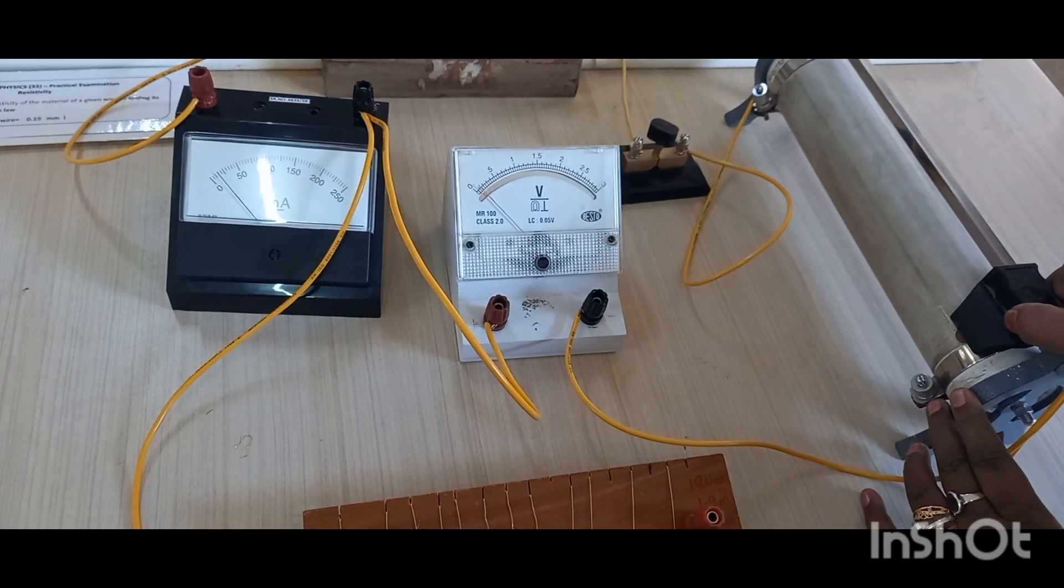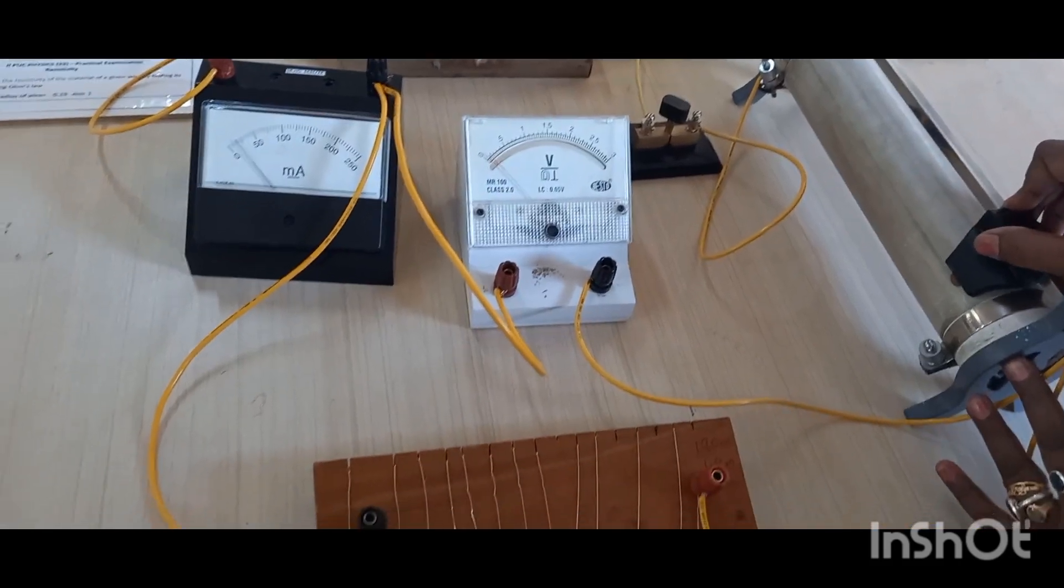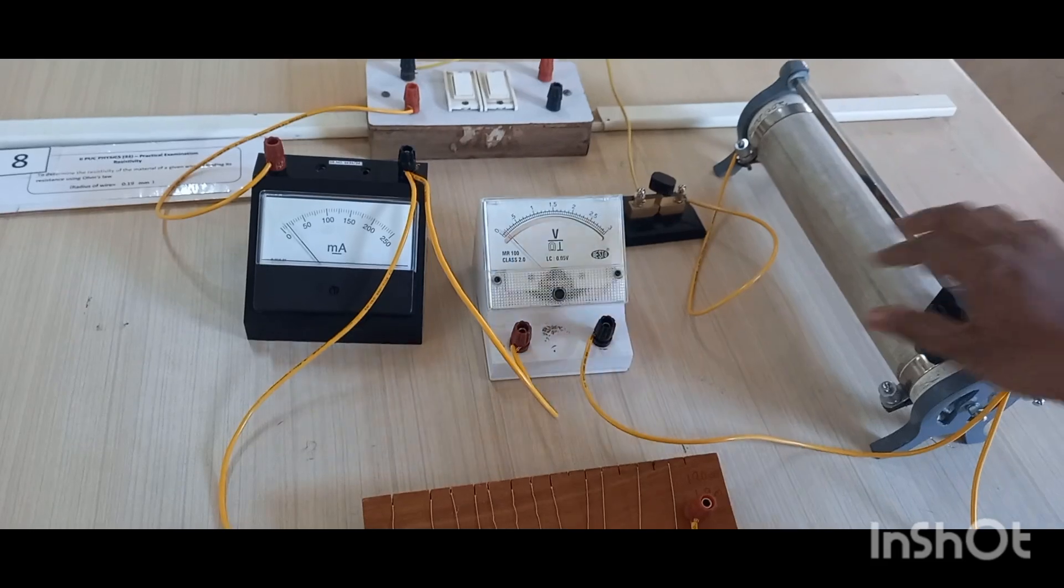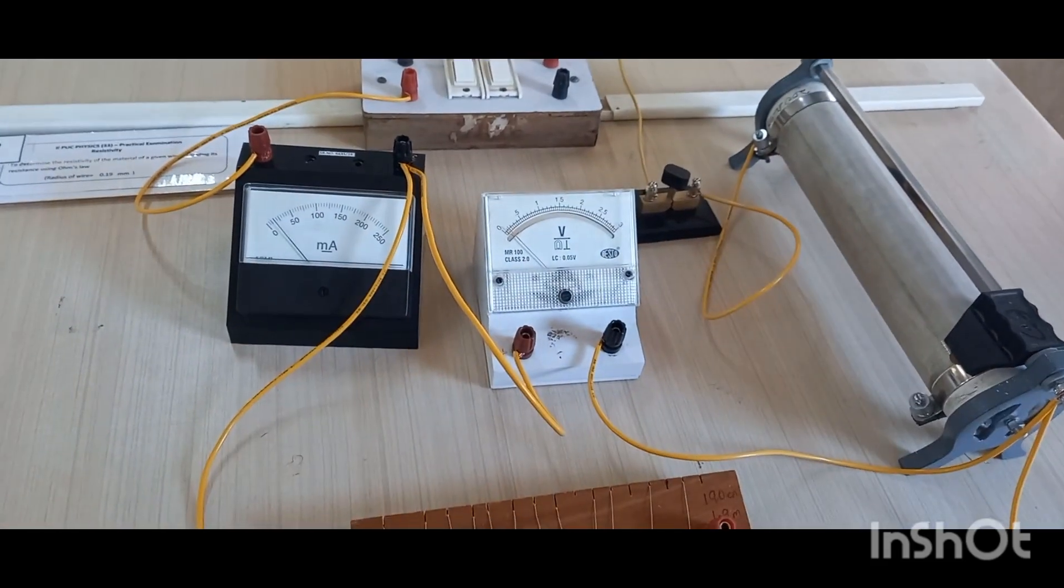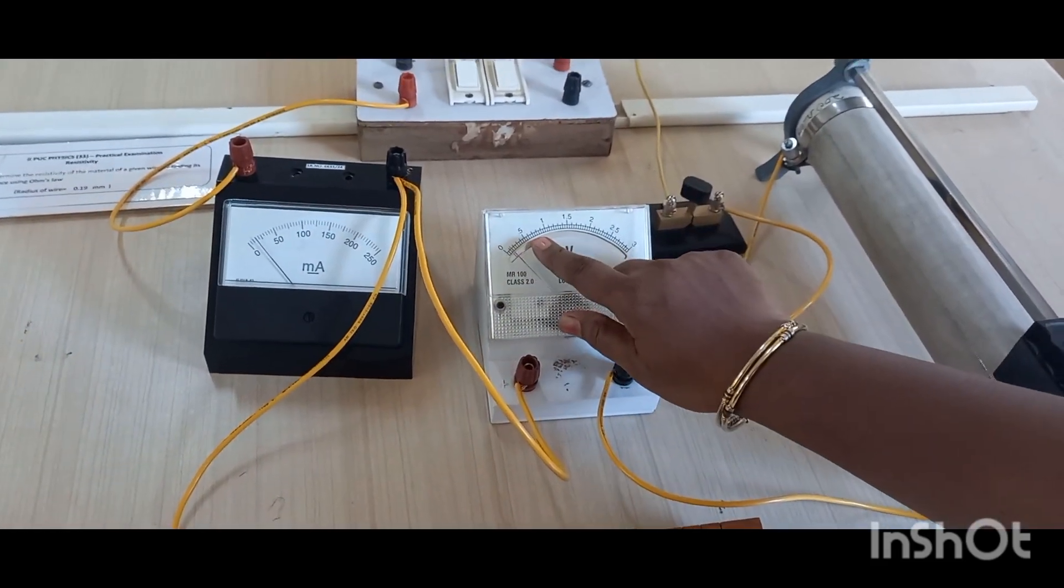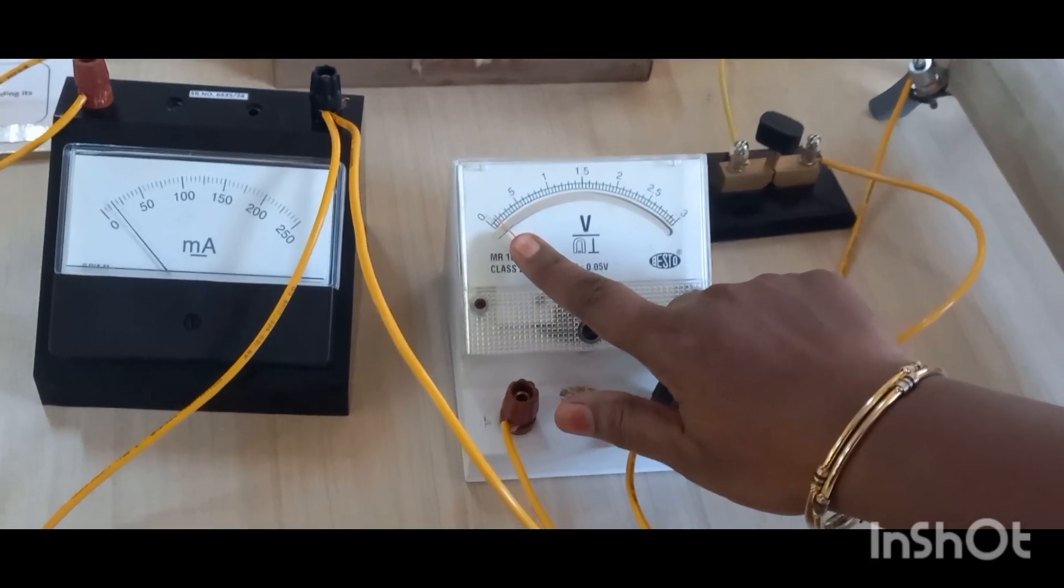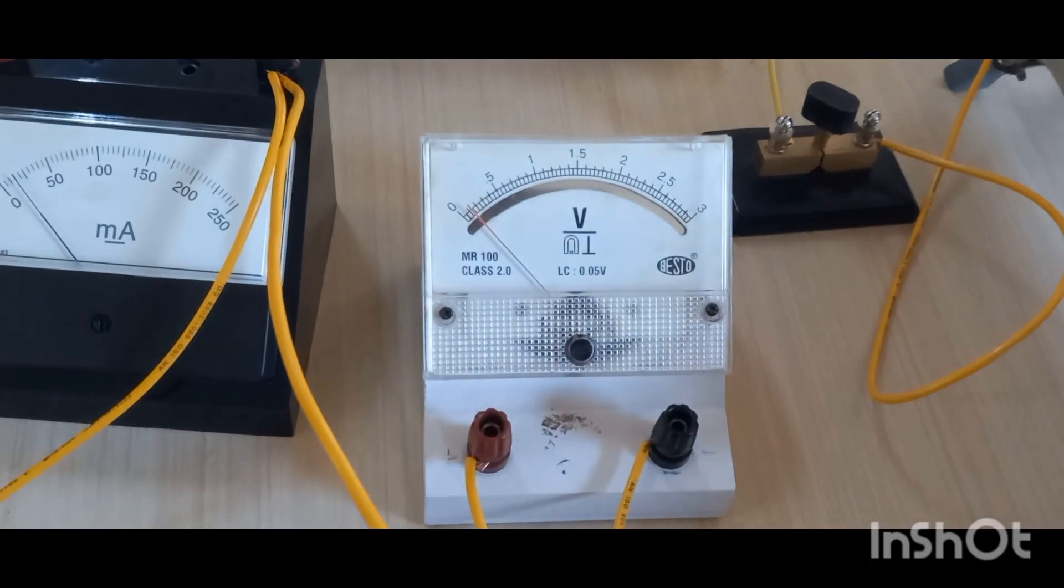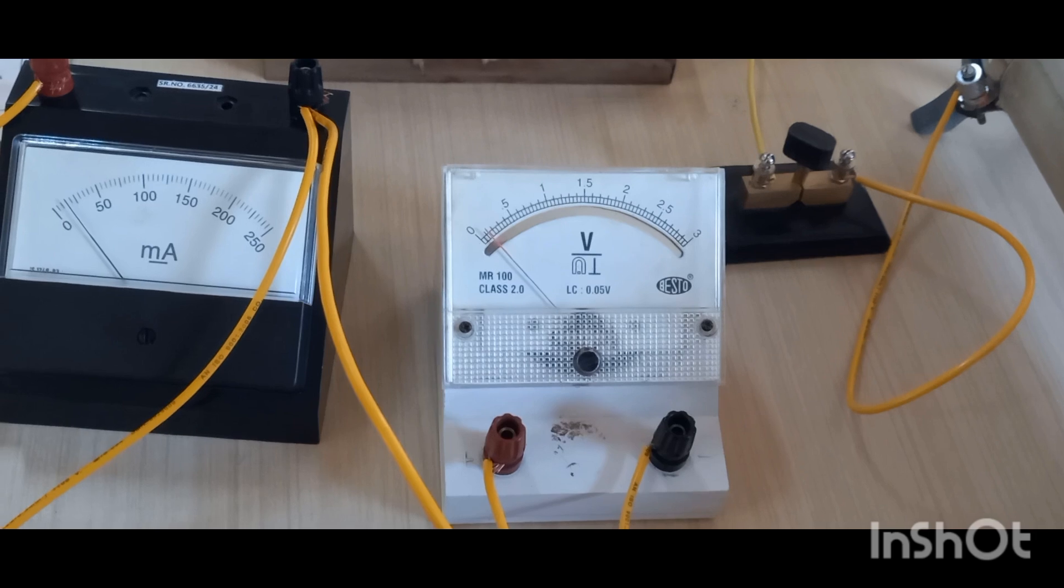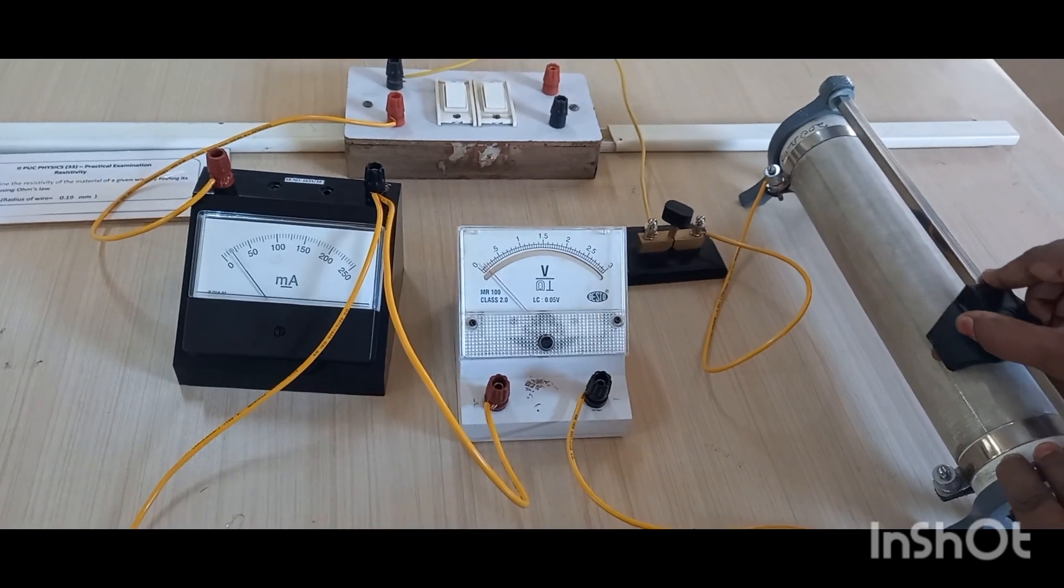So here let us see the range first then we will take the readings. From 0 to 0.5, single value of the voltmeter will be 0.05. So now I will take from 0.25, so that is 5 divisions.